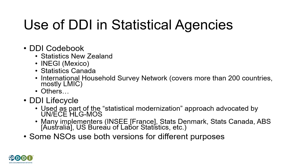The International Household Survey Network is a group of UN organizations — the technical part is led by the World Bank. More than 200 countries have household surveys and other micro data things like labor force surveys described in DDI Codebook, using tools and under a program run by the IHSN. They produce a lot of good DDI Codebook tools, including open-source data catalogs. There'll be a link on the next slide to their data catalog.